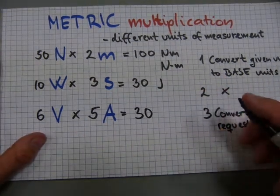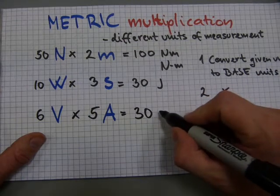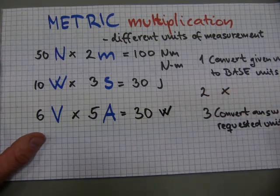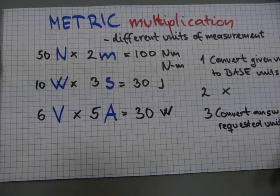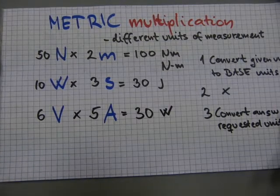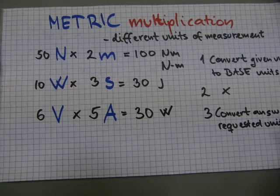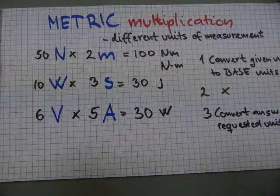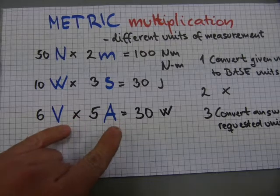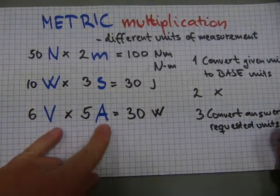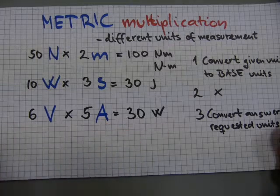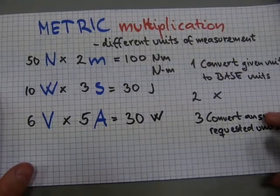And volts and amps, in this case, make again a new unit of measurement, called watts. And the power company charges you for watts, or kilowatts, well actually kilowatt hours, but that's another story. So, there you go. The requested amount, well there wasn't one, but two base units make up a third new base unit.